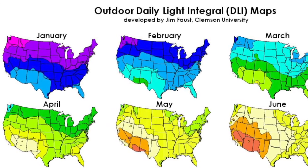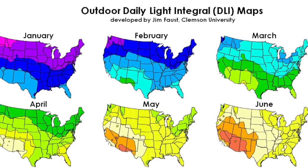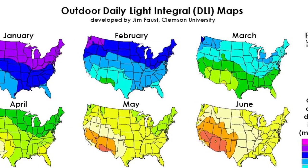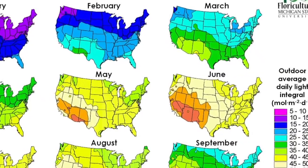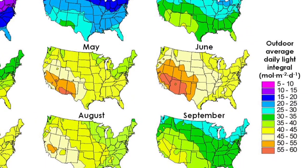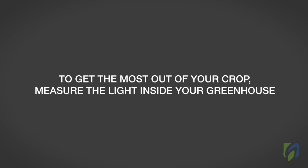At this time of the year, the outdoor DLI can range from 5 to 30 moles of light per square meter per day. The light values can be even lower inside the greenhouse, from 1 to 5 moles. To get the most from your crop, measure the light inside your greenhouse.